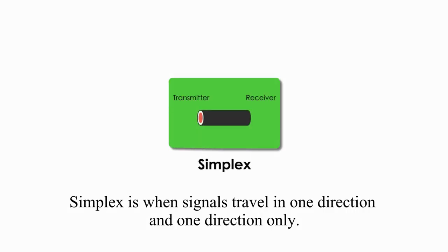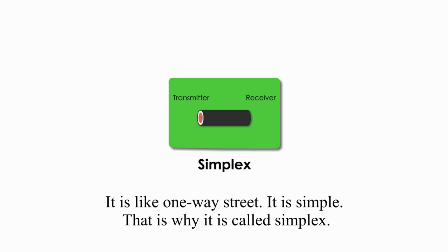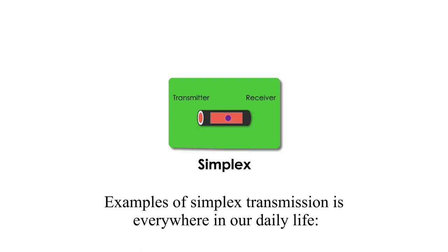Simplex is when signals travel in one direction and one direction only. It is like a one-way street. It is simple, that's why it is called simplex. Examples of simplex transmission are everywhere in our daily life.